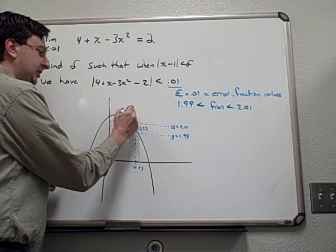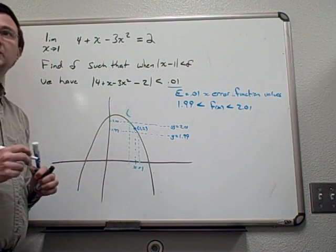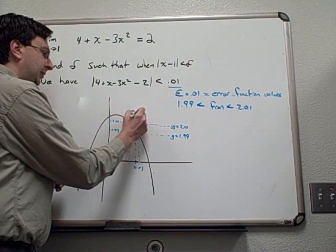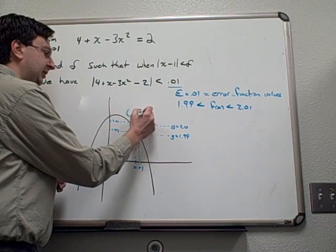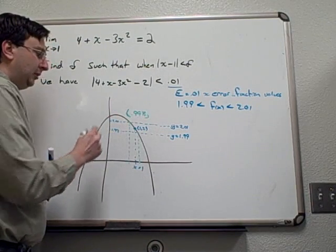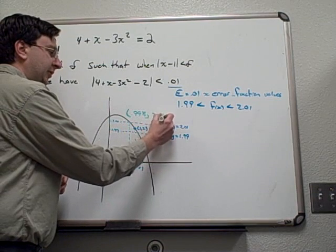We find that the intersection occurs when x equals, rounding to three decimal places, 0.998. We have an output of 2.01 for the function.